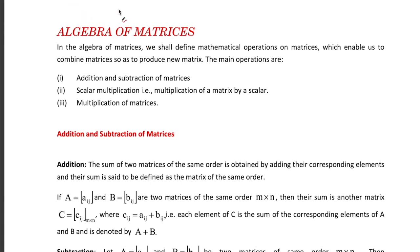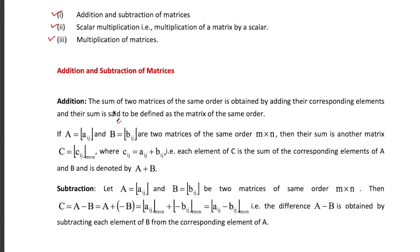In this video I will discuss algebra of matrices. There are three types: matrix addition and subtraction, where we can add or subtract two matrices; scalar multiplication, where we can multiply a matrix by a scalar quantity or number; and third, multiplication of matrices.